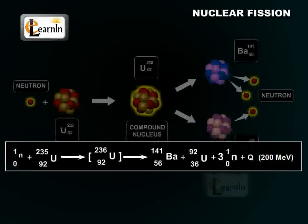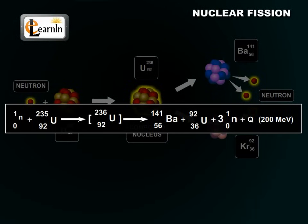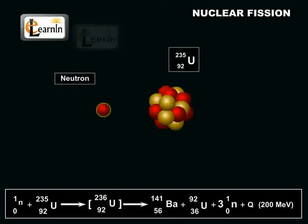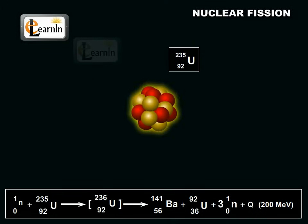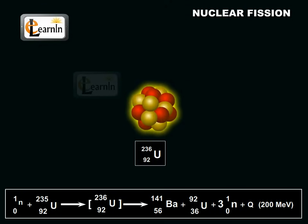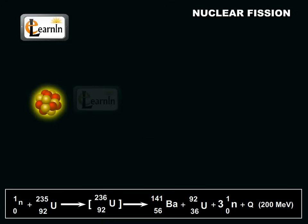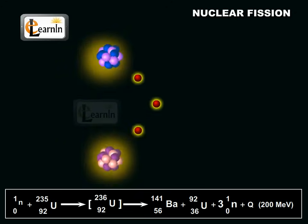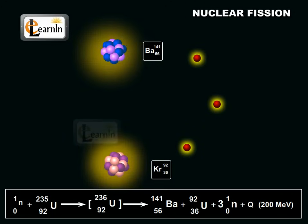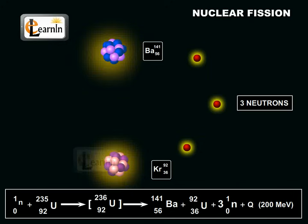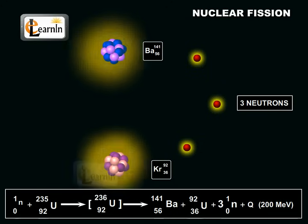The chemical equation of the nuclear fission reaction can be represented by this equation. As you can see, one neutron combines with uranium-235, forming an unstable compound nucleus, uranium-236. This unstable nucleus splits into two stable nuclei — barium-141 and krypton-92. In addition to these two nuclei, three neutrons are also emitted, as well as a high amount of energy, denoted in the equation by Q.